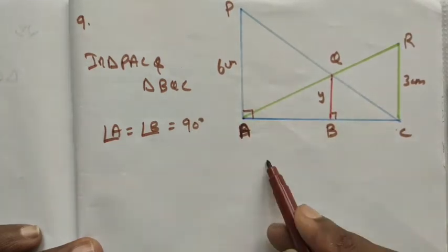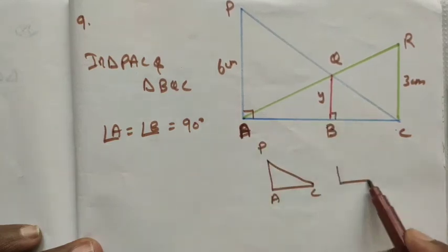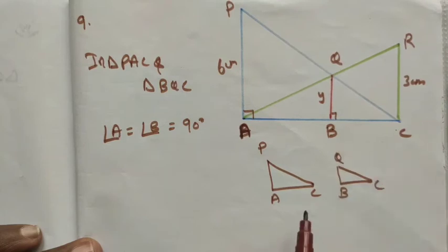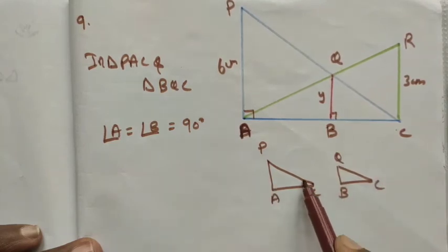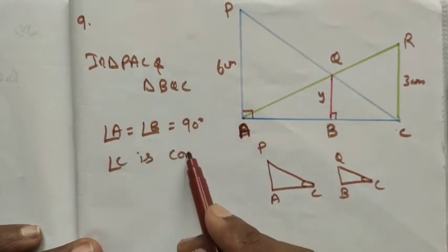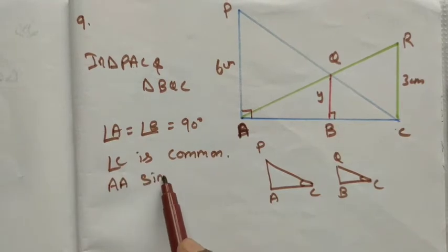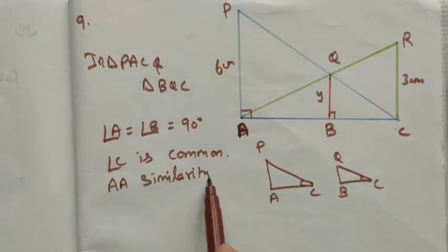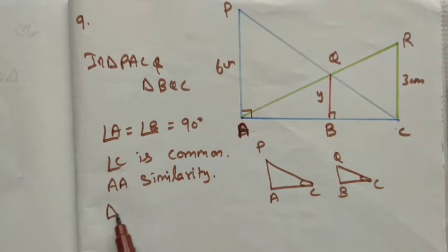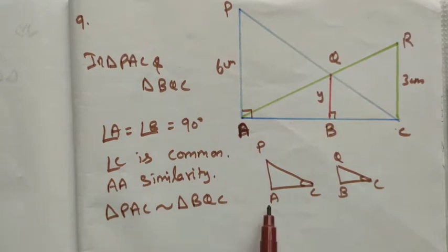I draw both triangles separately. Triangle APC is one triangle and triangle BQC is the other. For both triangles, angle C is common to both. By AA similarity, we can say triangle PAC is similar to triangle BQC.